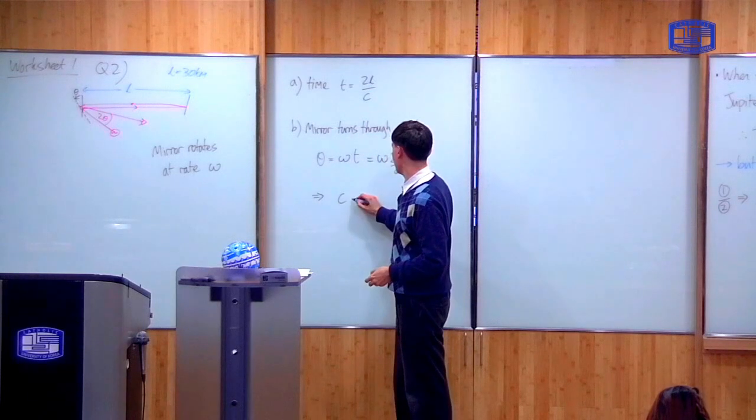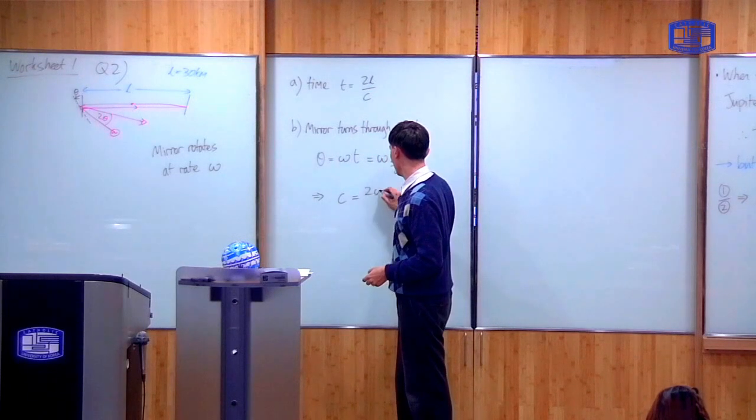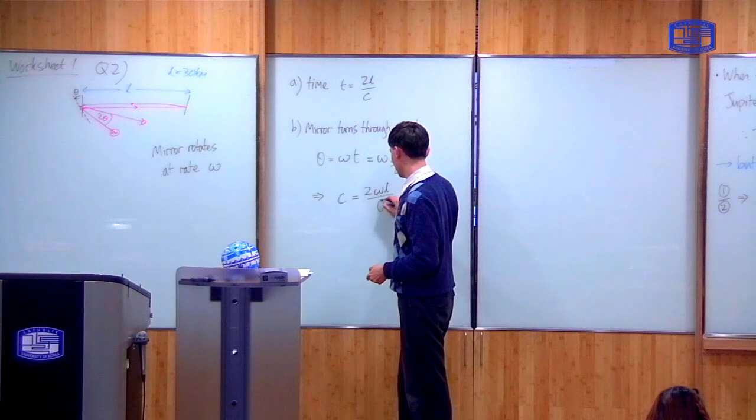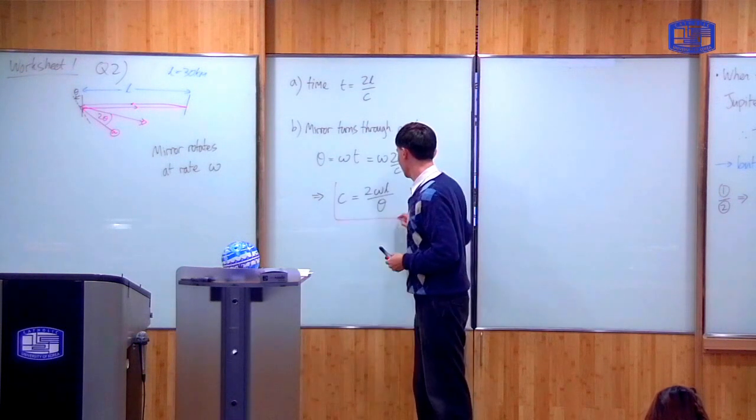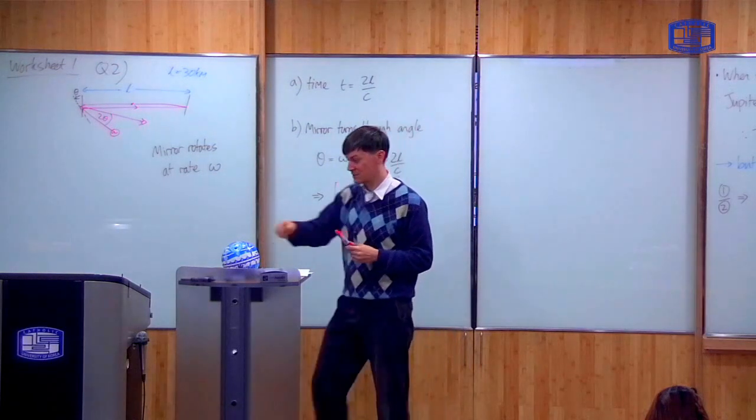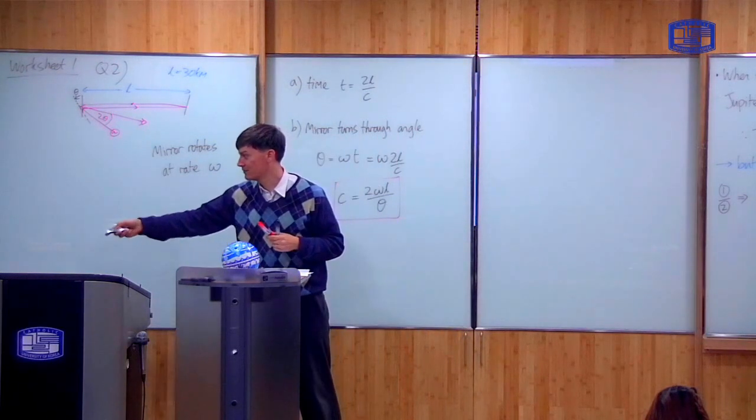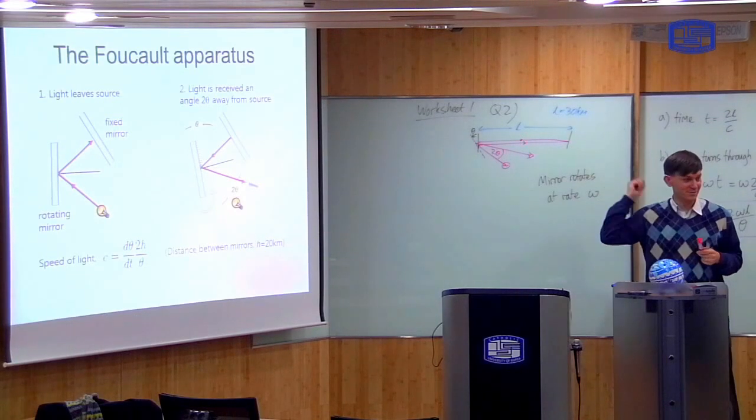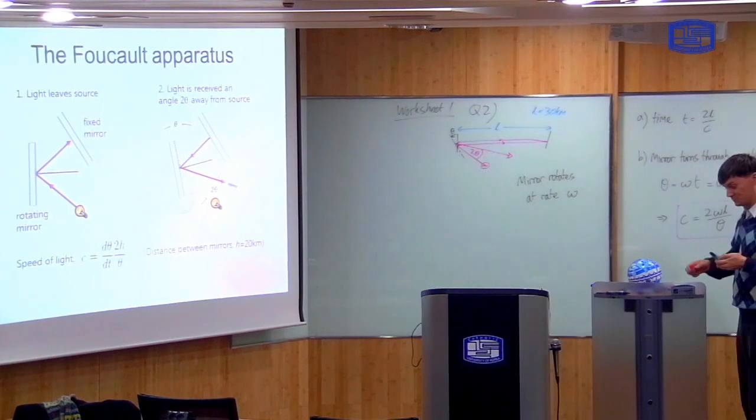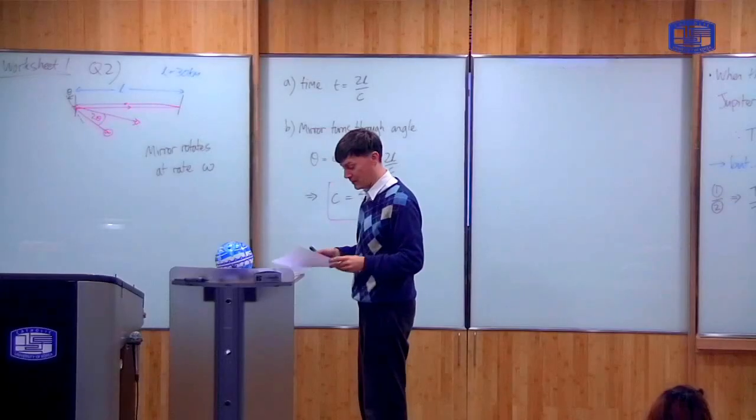So just rearranging, then you get the speed of light is equal to 2 omega L over theta. So that's it. So that's the equation that was on this slide here. Except omega is d theta by dt. And H, I've called L. It's the same formula.